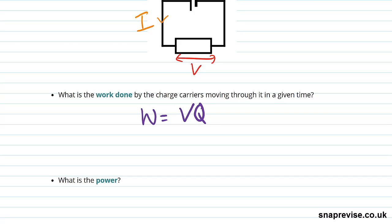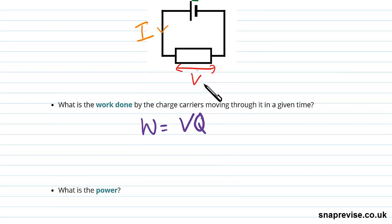We've seen that formula before, but the idea is the work done moving through a component is the potential difference across that component, which here is V, times the charge moving through that component, which is Q.